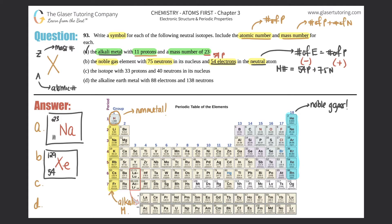Part c: the isotope with 33 protons and 40 neutrons. The atomic number is 33, and scanning the periodic table, element 33 is arsenic (As). The atomic number 33 goes on the bottom, and the mass number is 33 protons plus 40 neutrons, which equals 73. So the symbol is As with 73 on top and 33 on the bottom.